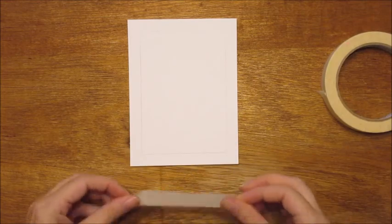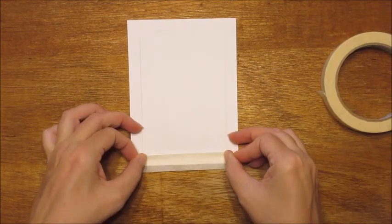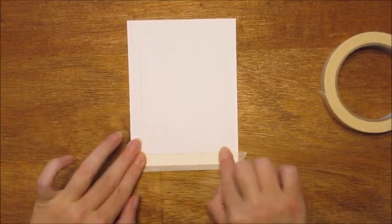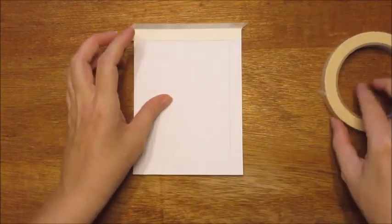So just do a rough measurement, tear off the tape, and line it up on each edge. Press down the inside edge so it has full contact with the paper.